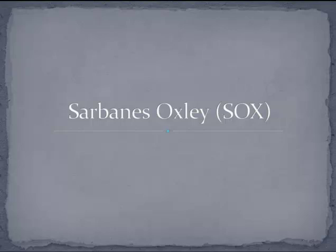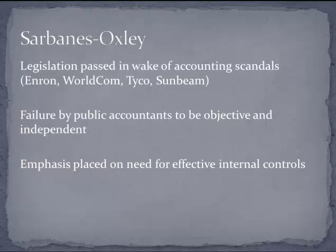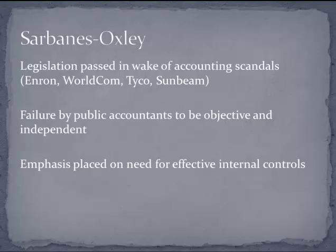This was a response to a bunch of accounting scandals that rocked the United States in a very short period of time. A number of companies like Enron, WorldCom, Tyco, and Sunbeam all either went out of business or were forced to file for bankruptcy shortly after it was discovered that the company and the accounting firm that had audited them were collaborating together to mislead the public and to lie about their financial statements. Because of all of these companies going out of business, Congress felt the need to address this failure of public accountants to be objective and to be independent.